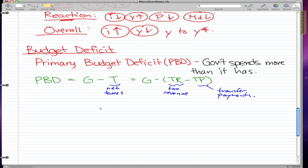We can pretty much say that this formula is equivalent to the following formula when we expand it. G minus TR plus TP and overall the formula would be PBD equals government spending minus T times Y. And T would be our net tax rate.